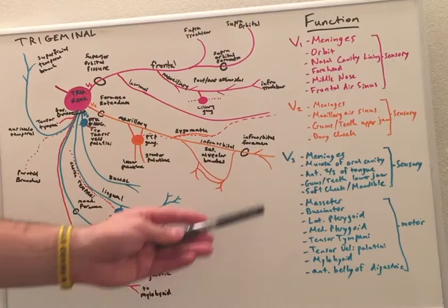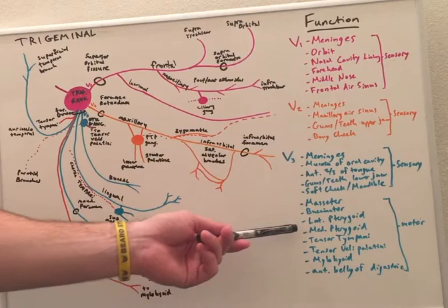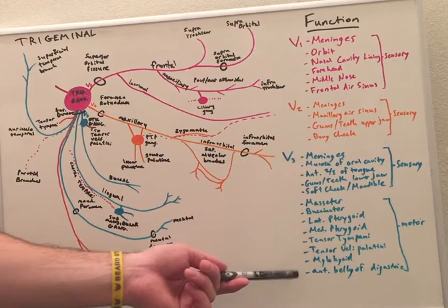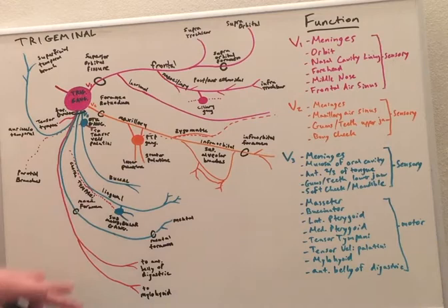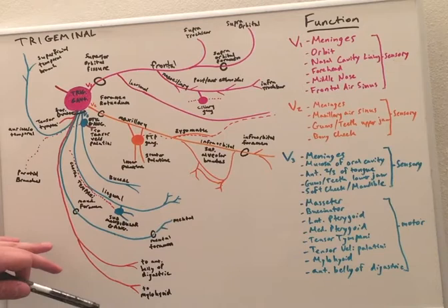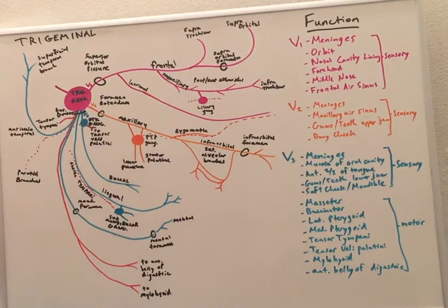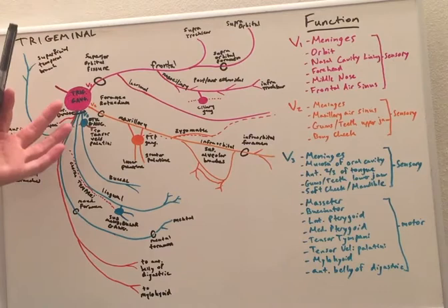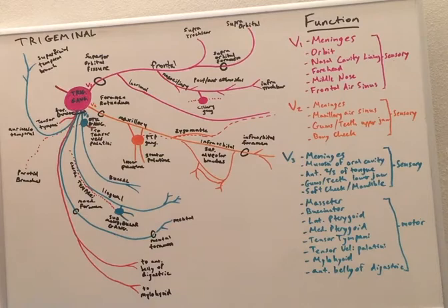Now the motor innervation it provides are to the masseter, buccinator, lateral pterygoid, medial pterygoid, tensor tympani, tensor veli palatini, mylohyoid, and anterior belly of the digastric. Now I've not included all of the motor fibers with the mandibular nerve only because some of their fiber courses are very short and it would have been difficult to label all of them. Okay, so even though many of these nerves have already branched prior to coming out of the foramen ovale, they are still all considered to be mandibular.